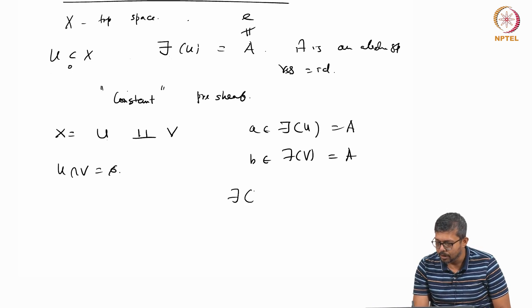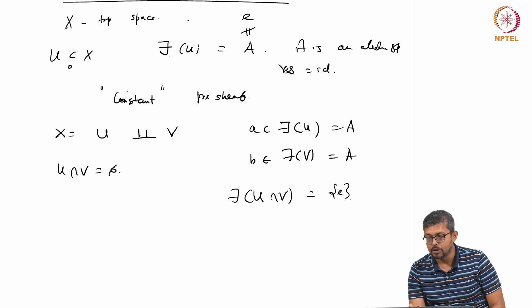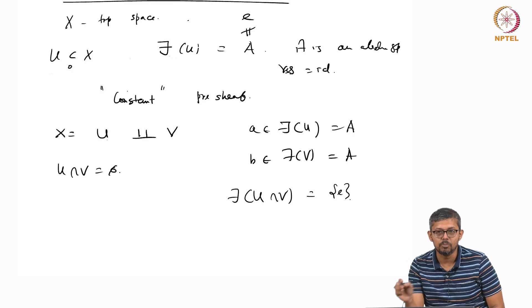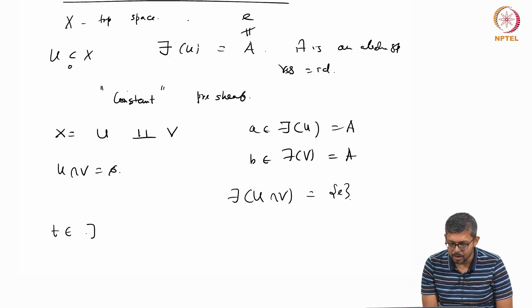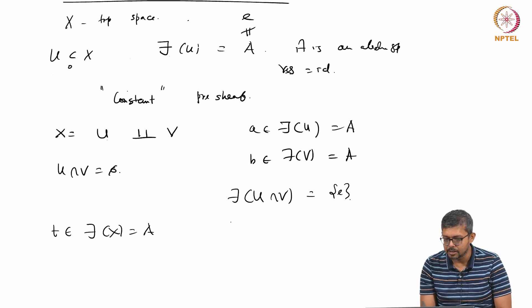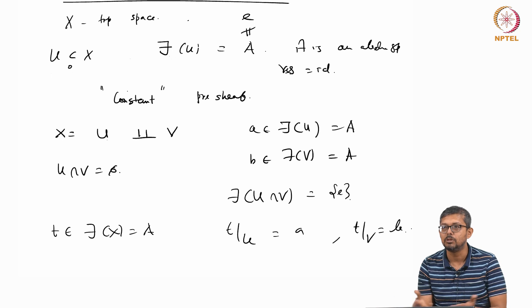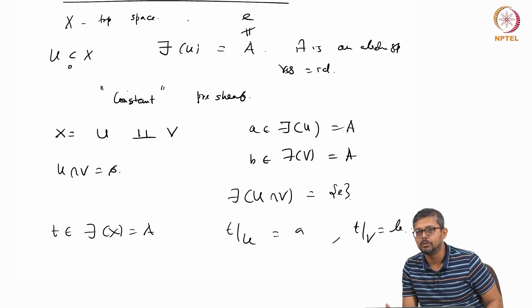Since the restriction maps are the identity, a restricted to U intersection V equals the identity, and b restricted to U intersection V also equals the identity. So a and b agree on the overlap. But the sheaf condition would require some element t in F of X equal to A such that t restricted to U is a and t restricted to V is b — which is impossible because the restriction maps are identity. Therefore the constant pre-sheaf is not a sheaf.